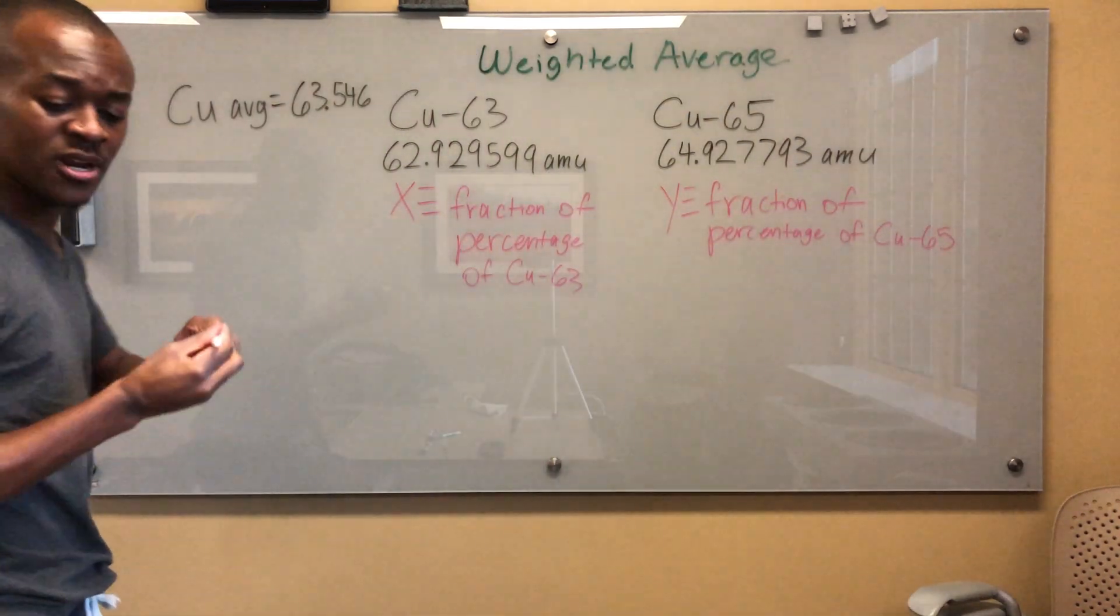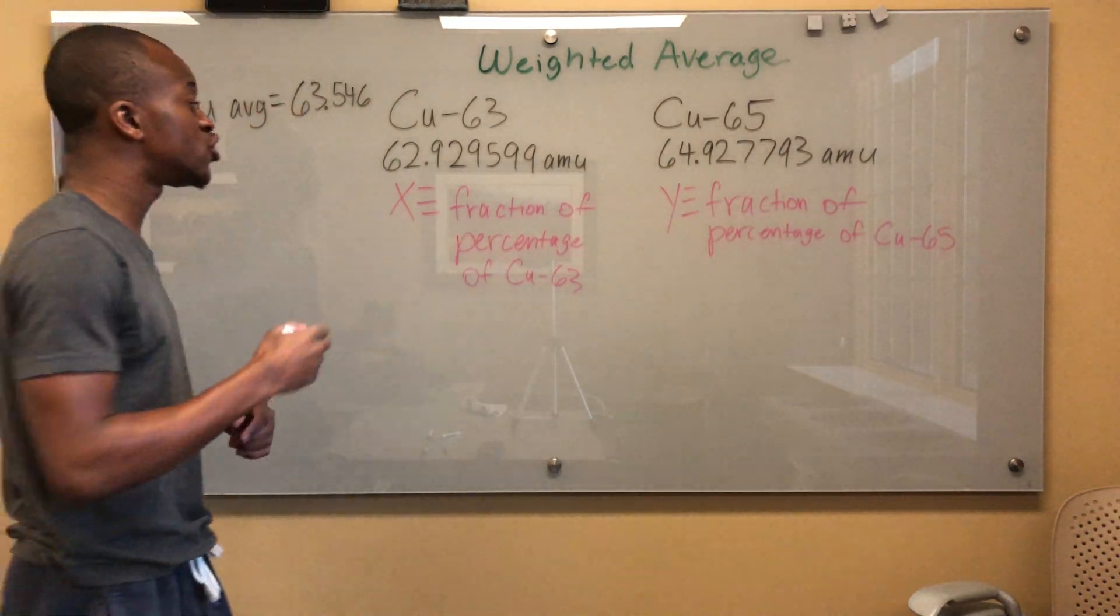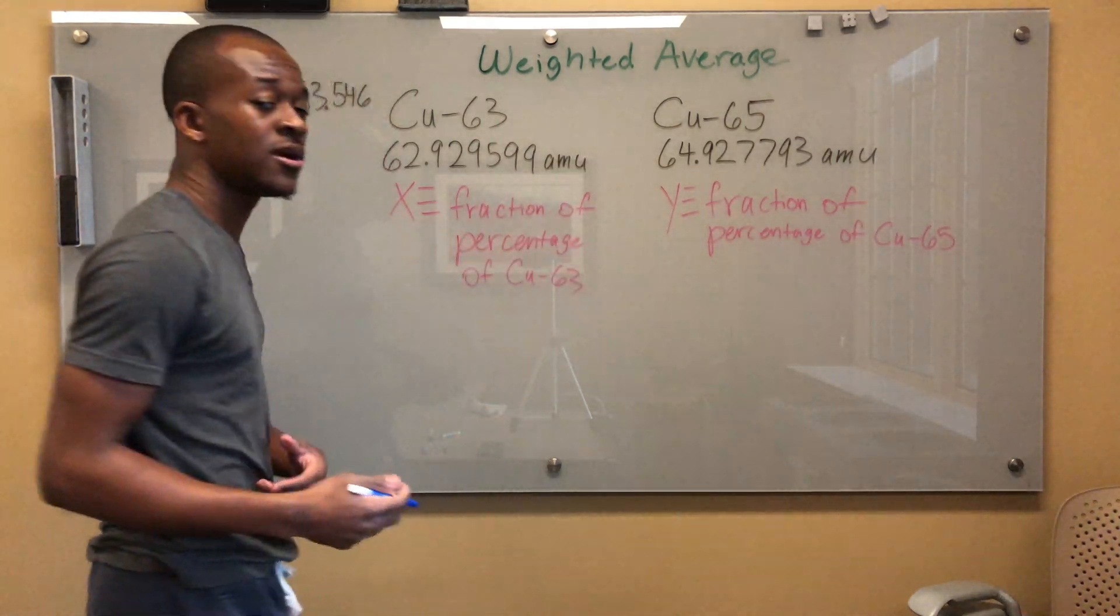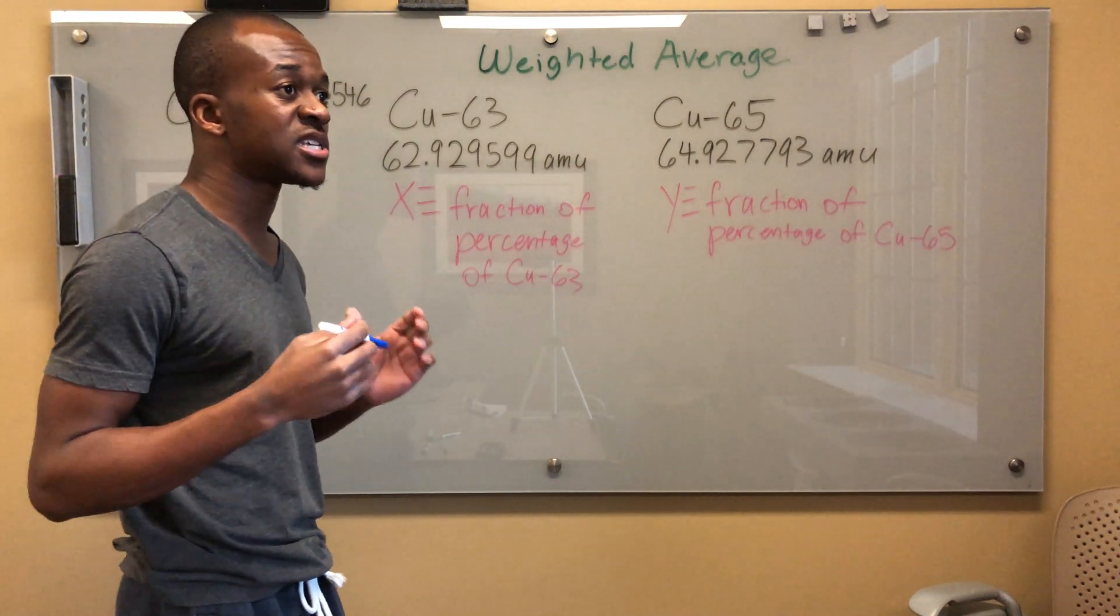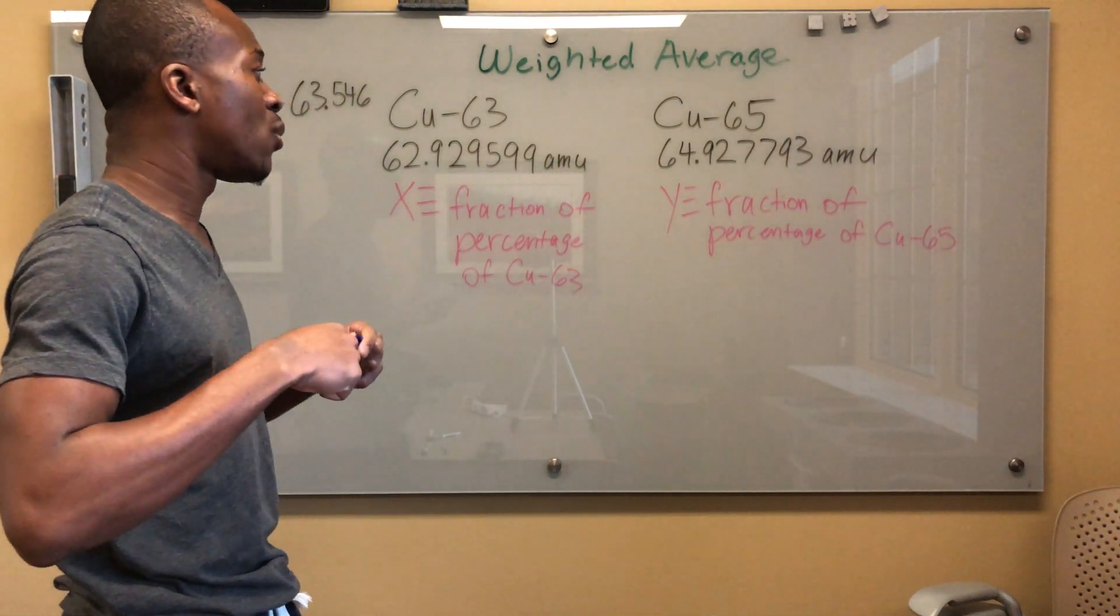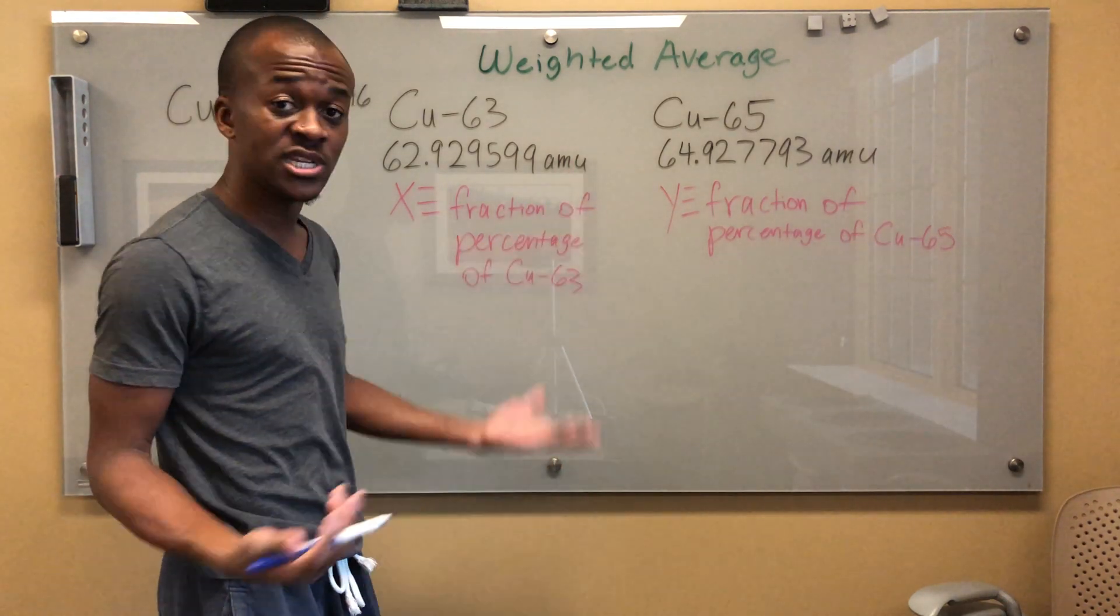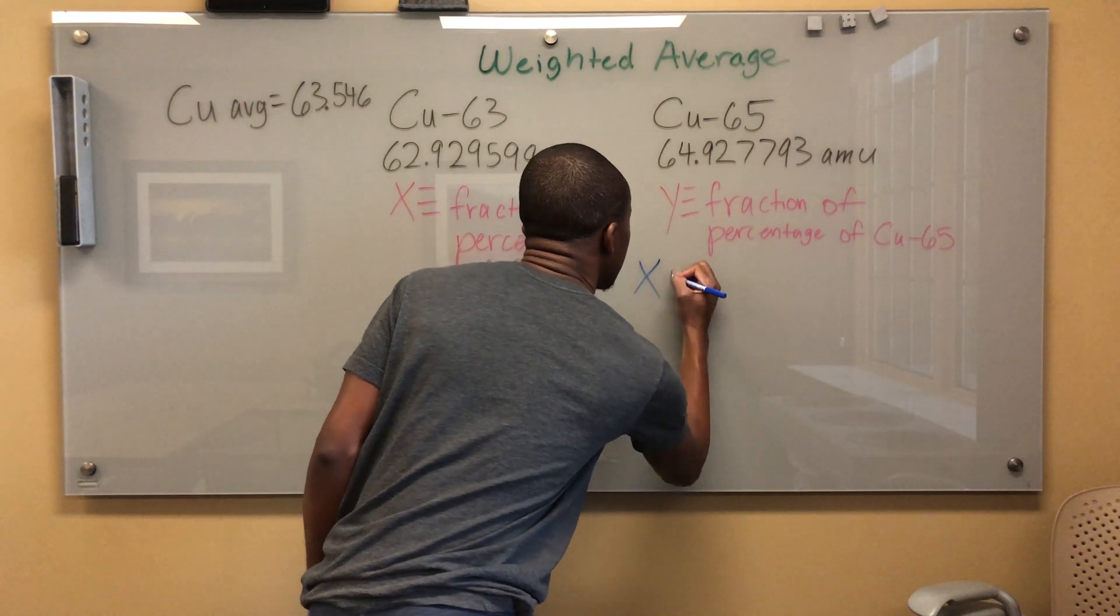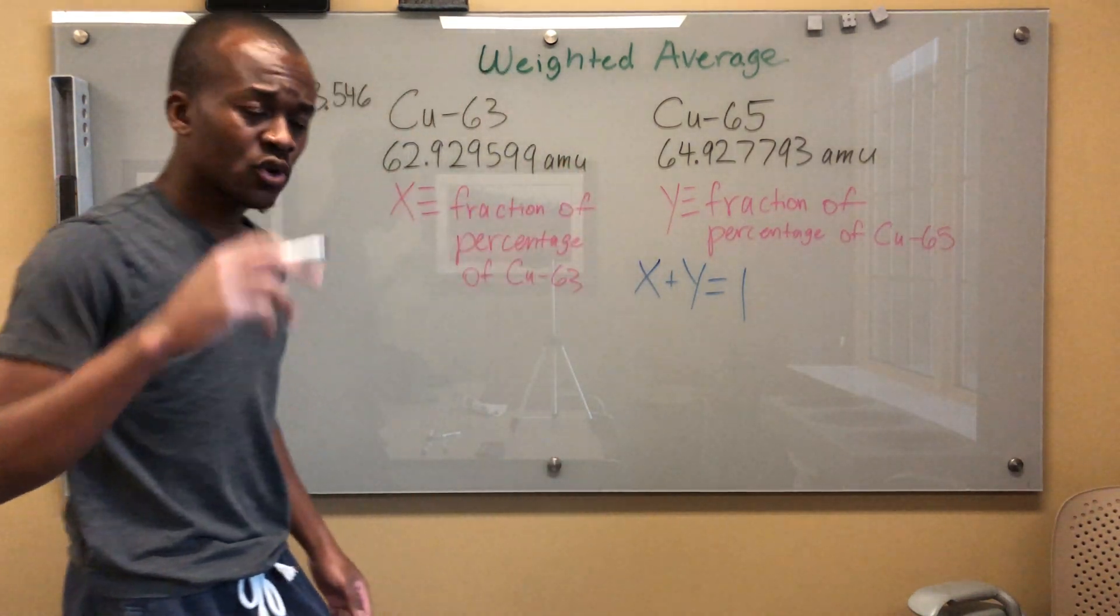So now I'm going to try and form a system of equations. And what is that? I basically have two unknowns that I'm looking for. They're asking for this percentage and this percentage, right? Because they have to be given as a percentage. So I'm going to set up a system of equations. And I'm going to say, well, I know that these two have to equal 100%, right? Because we're only dealing with two isotopes. So X plus Y has to equal one.